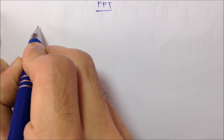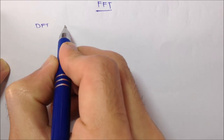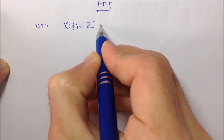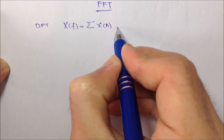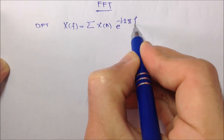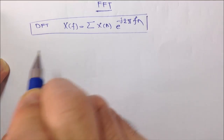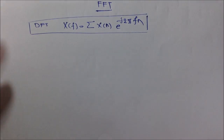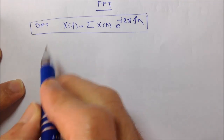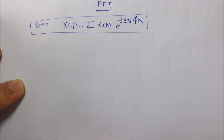If you remember from the previous video, the definition of the discrete Fourier transform was x of f equals summation of x of n times e to the minus j 2 pi f n. The problem with this transform is we can't plot x of f using a computer — we can't even compute x of f because f is a continuous variable.